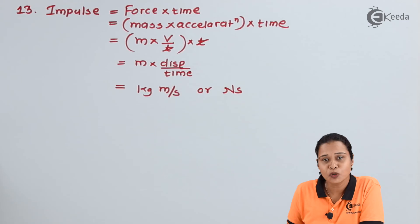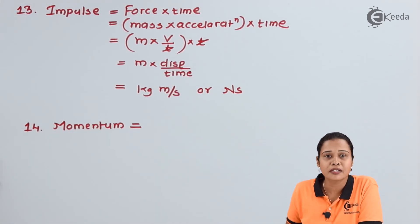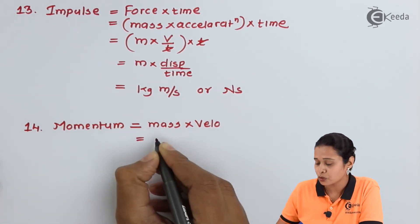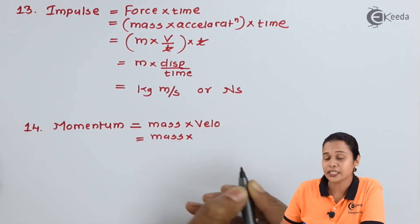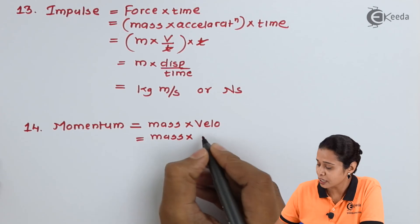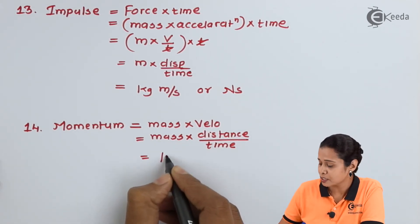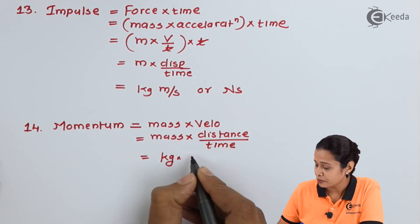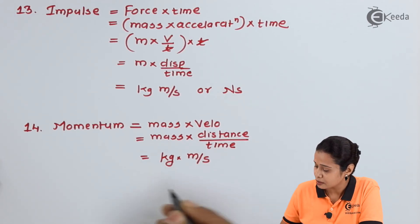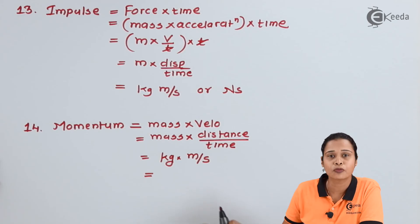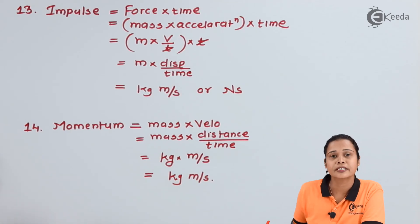The next physical quantity is momentum. We know momentum is mass into velocity. The unit of mass is kilogram, and velocity can be expressed as distance per unit time. So the unit of momentum is kilogram into meter per second, giving kg meter per second.